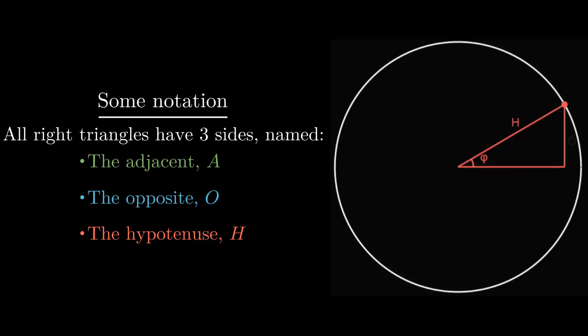We call the blue side the opposite, because it is opposite of the angle of interest. Similarly, we call the green side the adjacent, or A, because it is adjacent to the angle of interest.